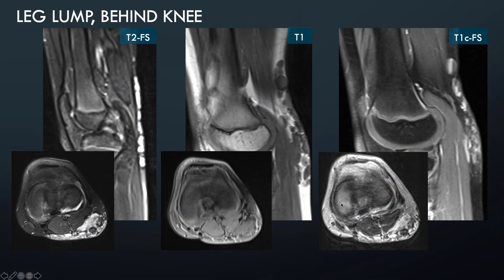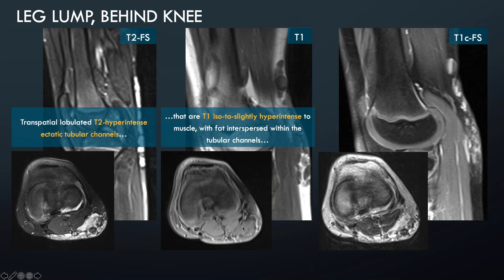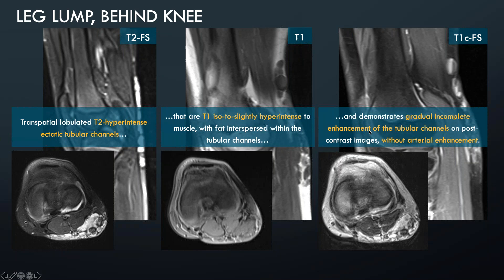Changing gears — a patient with a leg lump behind their knee. On the T2 fat-saturated sequence there are cystic channels behind the knee within the soft tissue that appear ectatic and T2 bright even in the presence of fat saturation. On T1, there is some fat interspersed within the lesion. After contrast administration, there's gradual incomplete enhancement at the time of image acquisition, but some enhancement of these cystic spaces — contrary to the lymphatic malformation, this one is enhancing. This would be characteristic of a venous malformation.